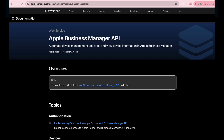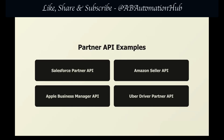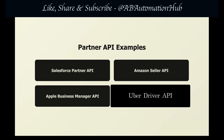Apple Business Manager API is another partner API example. Apple provides Partner APIs for enterprise customers — if your company buys hundreds of iPhones for employees, you get access to APIs that remotely manage those devices, install applications, enforce security policies, and track devices. But Apple does not offer this to individuals; you need an enterprise agreement, making you a business partner, not just a customer. Uber's driver API is another example of a partner API.